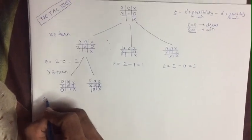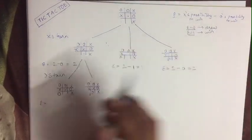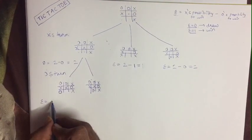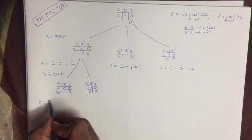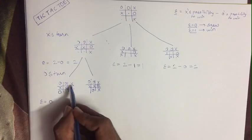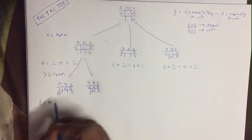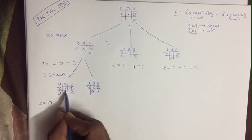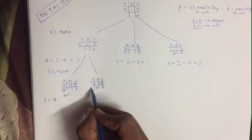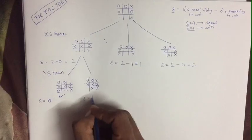Now you have to calculate E here. E value will be equal to X possibility minus O possibility. Here E will be equal to 0, as you can see none of them will win over here. If you keep X over here in the next turn it will be a draw, so E is equal to 0 in this one. Over here X winning possibility is equal to 1 and O winning will be 0, so here E will be equal to 1.